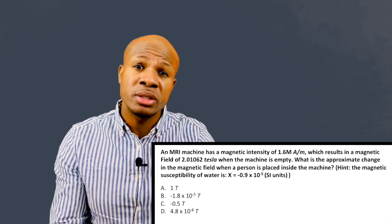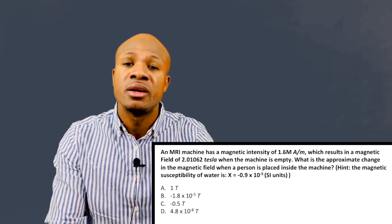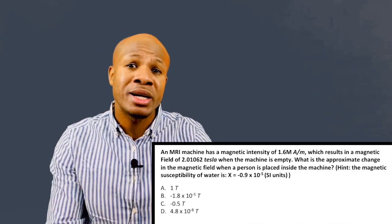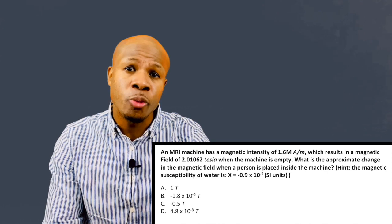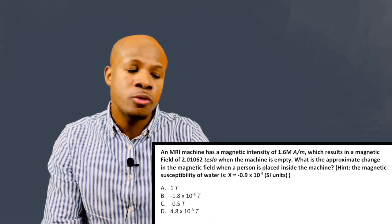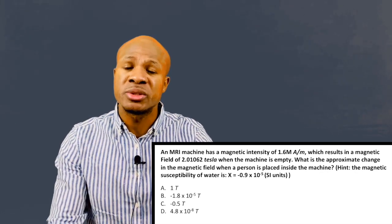This comes from empirical calculation. The magnetic susceptibility of a vacuum is 4 pi times 10 to the negative 7. So if we multiply 4 pi times 10 to the negative 7 times the magnetic intensity of 1.6 million, we get 2.01062 tesla. So that's where that comes from.